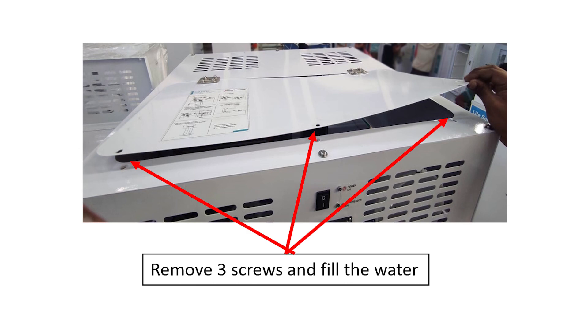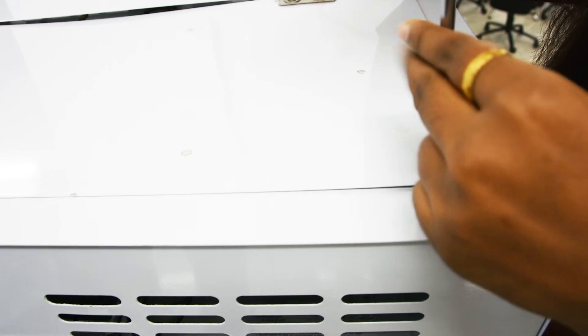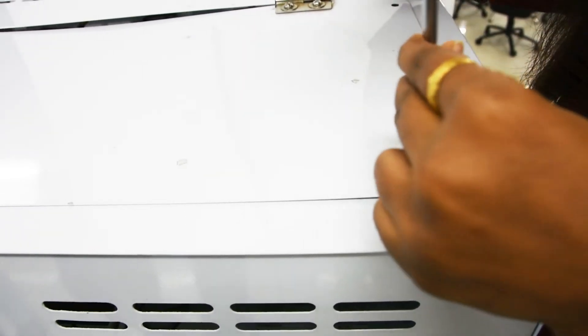To fill the water in the water tank, we need to remove the flap assembly. To remove the assembly, we need to remove the screws.